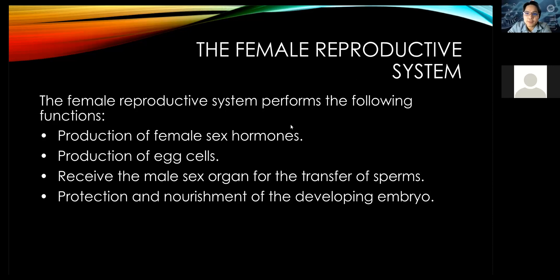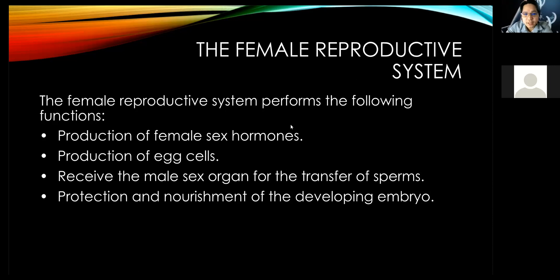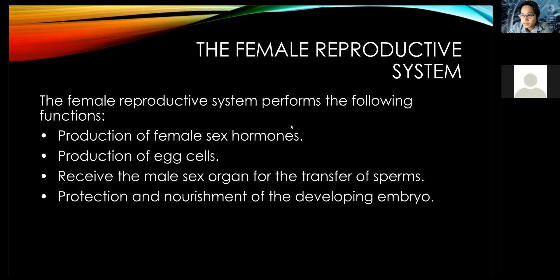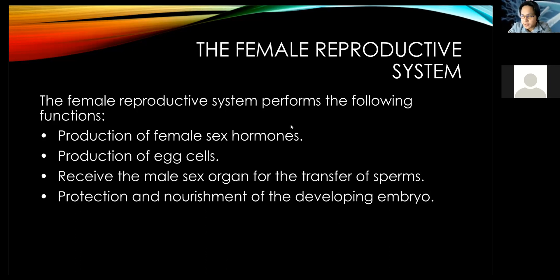Let's move now to the female reproductive system. The female reproductive system performs the following functions. Number one: production of female sex hormones. Are you familiar with these female sex hormones? The estrogen and the progesterone. These are the female sex hormones. We'll discuss later what these hormones are.